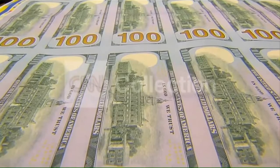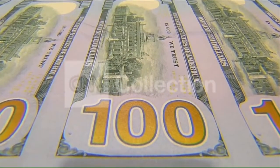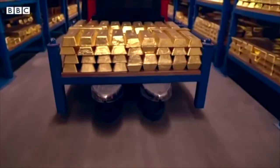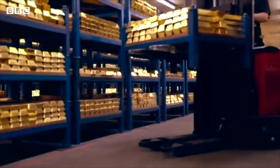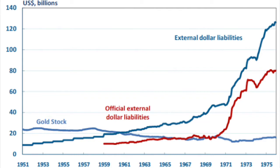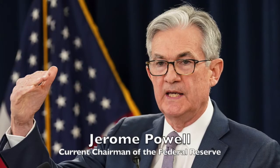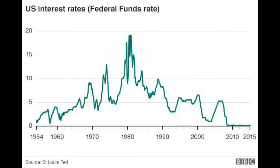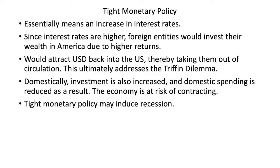However, as America began to print more dollars, an issue began to rise. The global gold stocks largely remained unchanged, as the US dollar peg undervalued the price of gold and therefore could not ensure a profitable production of it. Because of these factors, the amount of dollars in circulation would one day exceed the dollar value of all the world's gold. This was known as the Triffin Dilemma, and was concerning because the Federal Reserve would one day not be able to meet a sudden exchange demand, which could subsequently collapse the global monetary system. Dollars in circulation officially overtook gold reserves in 1964, but by that time several political and economic measures were implemented to dissuade central banks from cashing in their dollars for gold. The common sense measure was to reduce the amount of dollars in circulation. The simplest way to achieve this was for the Federal Reserve to increase interest rates, which would attract US dollars back into the United States for investment, thereby taking them out of circulation. This is known as a tight monetary policy.